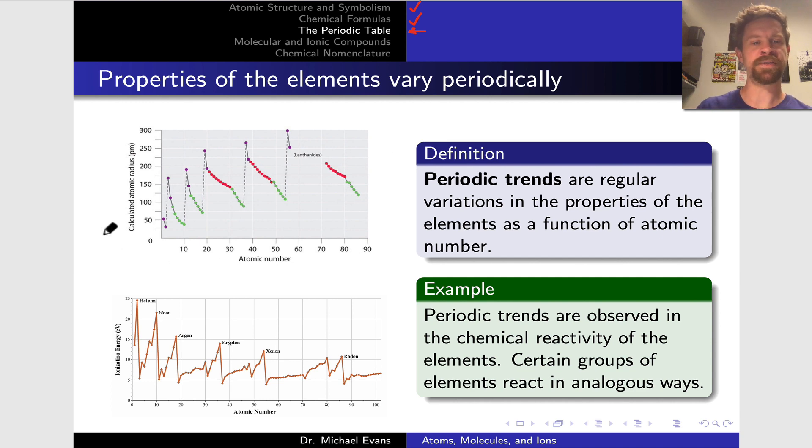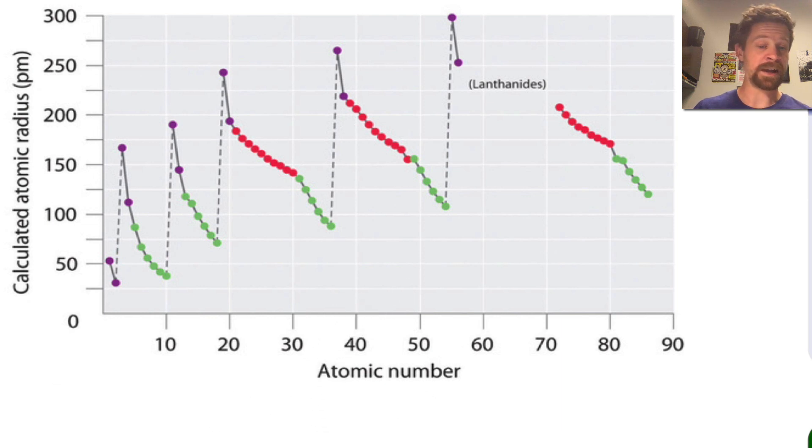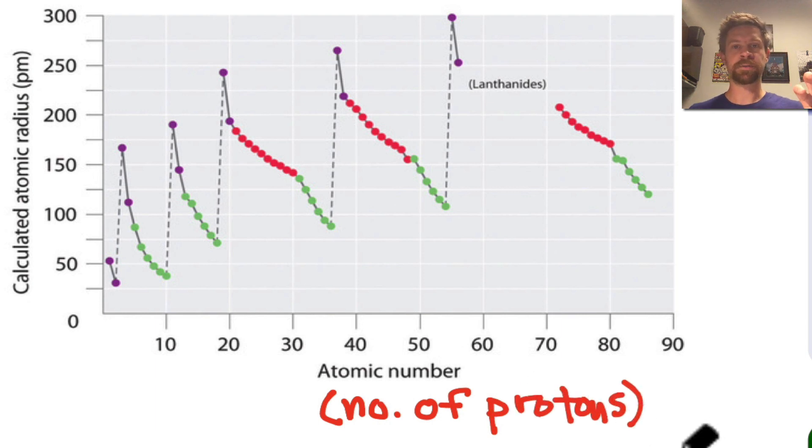So first let's take a look at this graph. We've placed the atomic number on the x-axis. Remember that this is just the number of protons in the nucleus and it really defines the elements. Going from left to right we're going from the smallest elements with the lightest nuclei to the heaviest elements on the right with the heaviest nuclei. And we're looking at different properties as we progress from light elements to heavy elements.